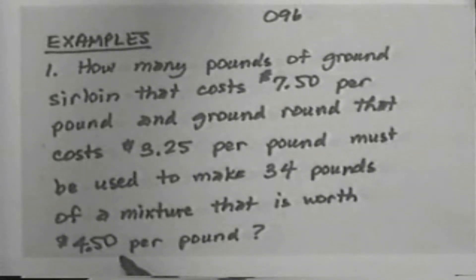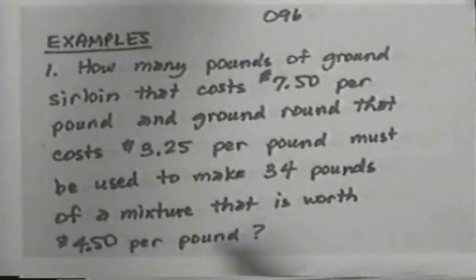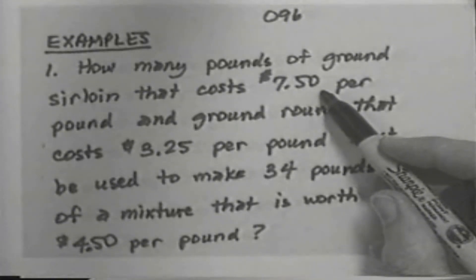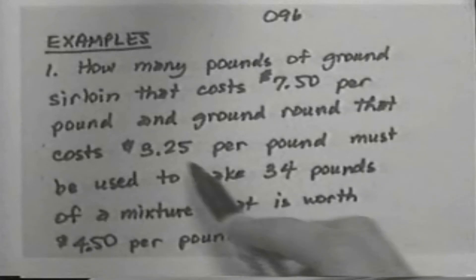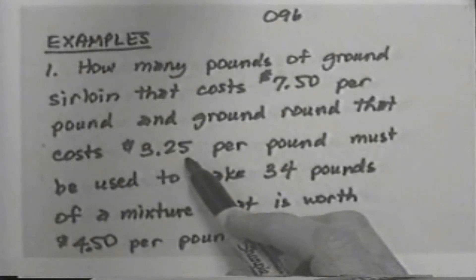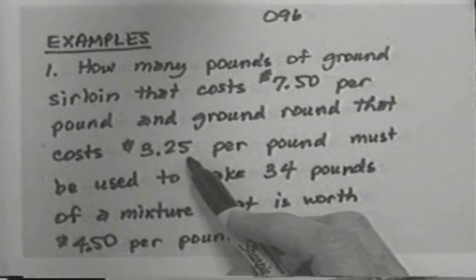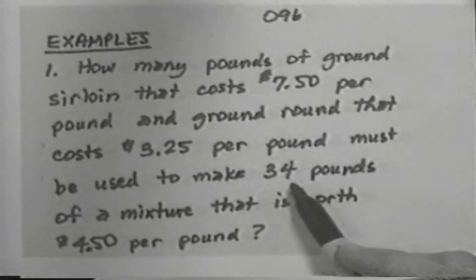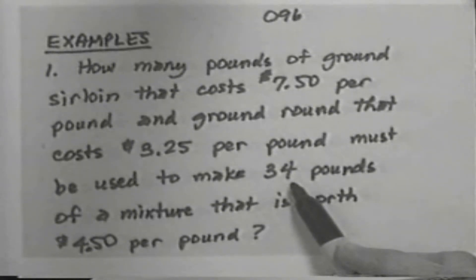Notice that we have four numbers: seven dollars and fifty cents for the sirloin per pound, three dollars and twenty-five cents for the round per pound, thirty-four for the number of pounds of the mixture, and four dollars and fifty cents per pound for the price of the mixture.